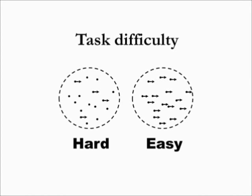We control task difficulty by changing the proportion of dots moving in the same direction. For example, when all the dots move in the same direction, subjects can easily make a correct decision fast.